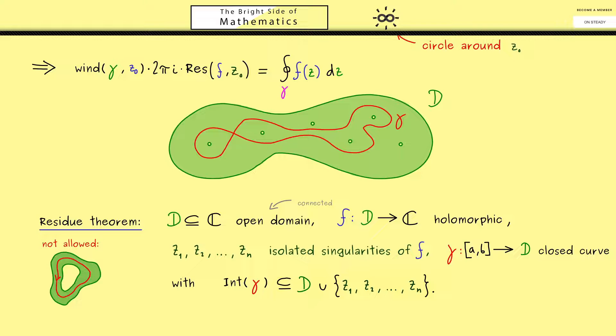Of course it's also possible to satisfy this condition by saying something about the open domain D first. For example if D is an open disk with the exception of the isolated singularities this condition here is obviously for all curves gamma fulfilled.